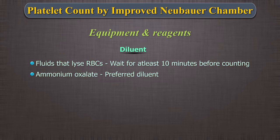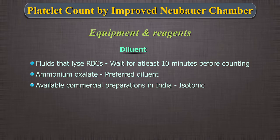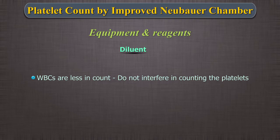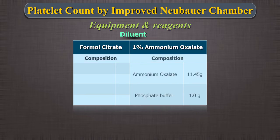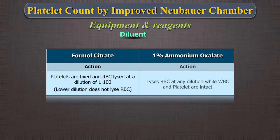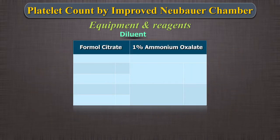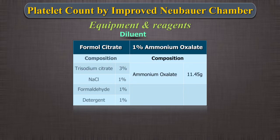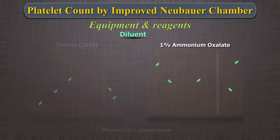Most standard textbooks recommend ammonium oxalate as the preferred diluent as it lyses RBCs. However, the easily available commercial preparations in India are isotonic. Therefore, it is important to understand the counting processes in both. WBCs are less in count so they do not interfere in counting the platelets. Formal citrate composition: Trisodium citrate 3%, NaCl 1%, Formaldehyde 1%, detergent 1% — action: platelets are fixed and RBCs lysed at a dilution of 1:100. 1% ammonium oxalate composition: ammonium oxalate 11.45 grams, phosphate buffer 1 gram — lyses RBCs at any dilution while WBCs and platelets are intact.